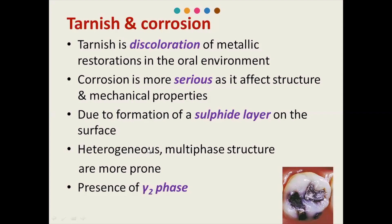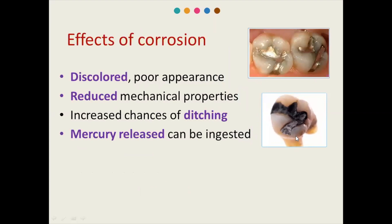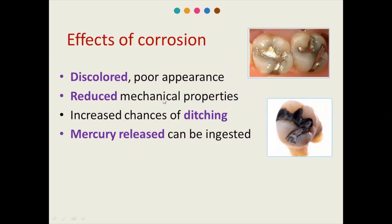The causes — materials more prone to corrosion are those with heterogeneous composition having a multi-phase structure. So homogeneous composition should be selected. Presence of the gamma-2 phase, which is present in low copper silver amalgam, makes it more prone to corrosion. Because of corrosion, the silver amalgam looks discolored and appears poor in appearance; aesthetics are lost. Mechanical properties like strength and dimensional change get reduced. There is increased chance of ditching, and there can be release of mercury which can be ingested by the patient.